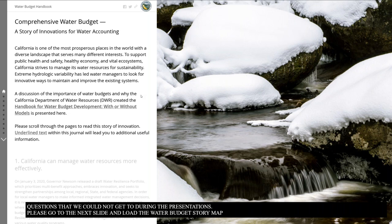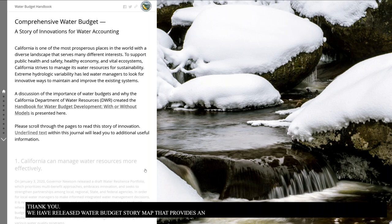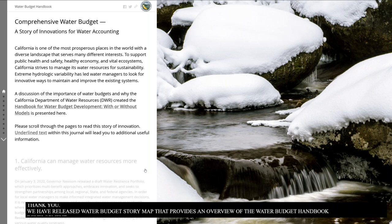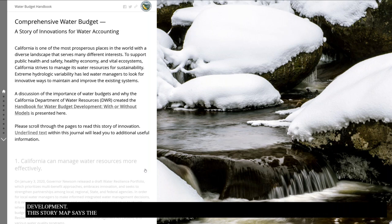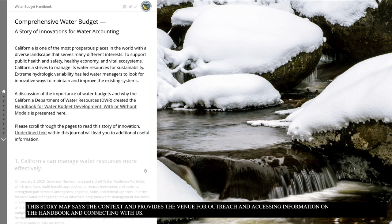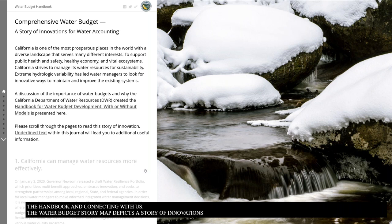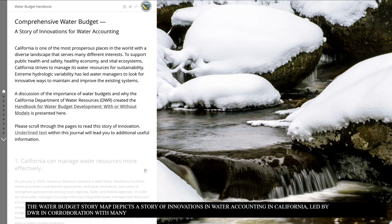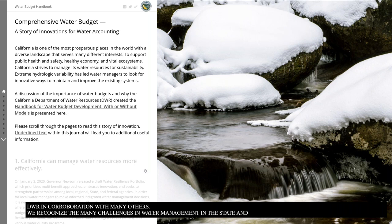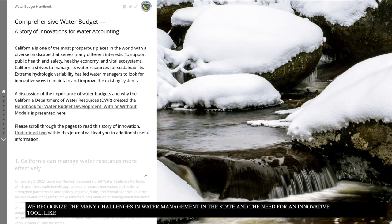We have released a water budget story map that provides an overview of the water budget handbook development. This story map sets the context and provides a venue for outreach, accessing information on the handbook, and connecting with us. The water budget story map depicts a story of innovations in water accounting in California, led by DWR in collaboration with many others. We recognize the many challenges in water management in the state and the need for an innovative tool like the water budget handbook to address some of these challenges.